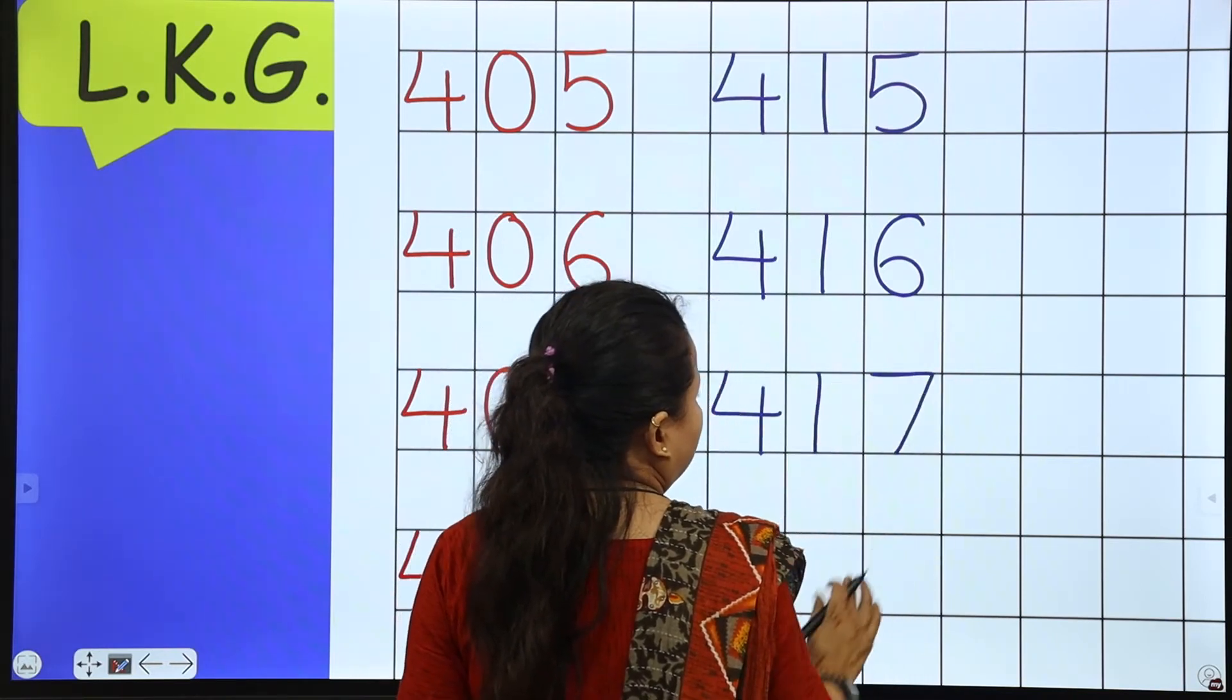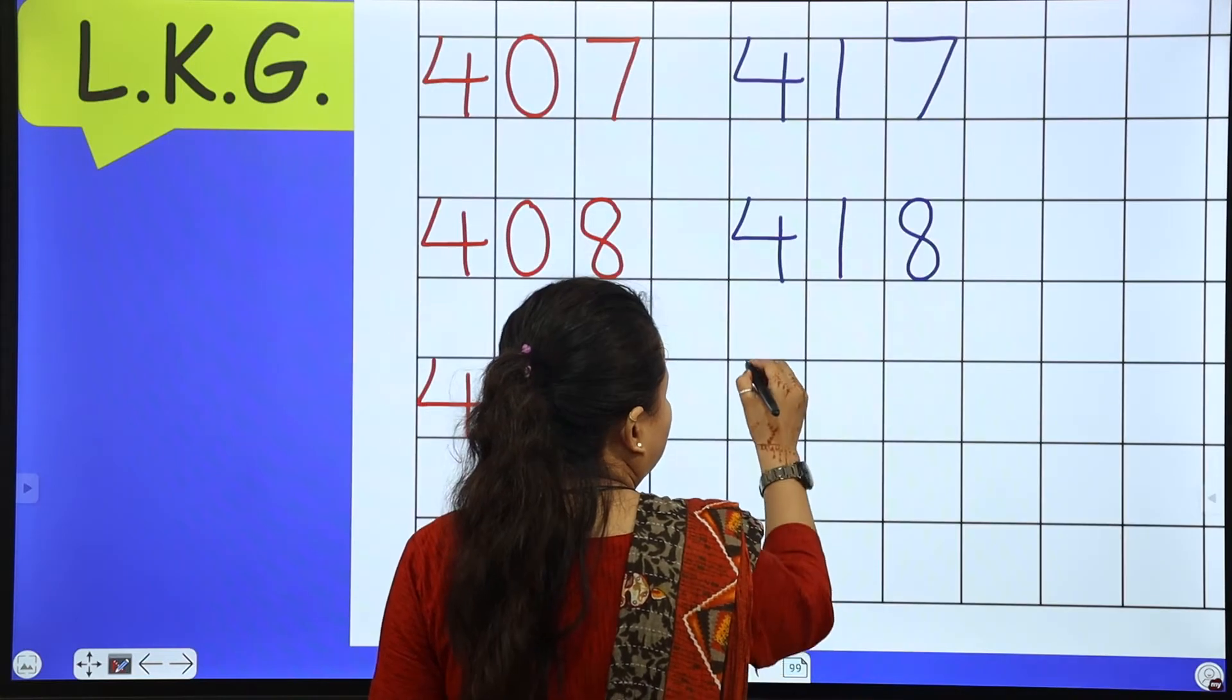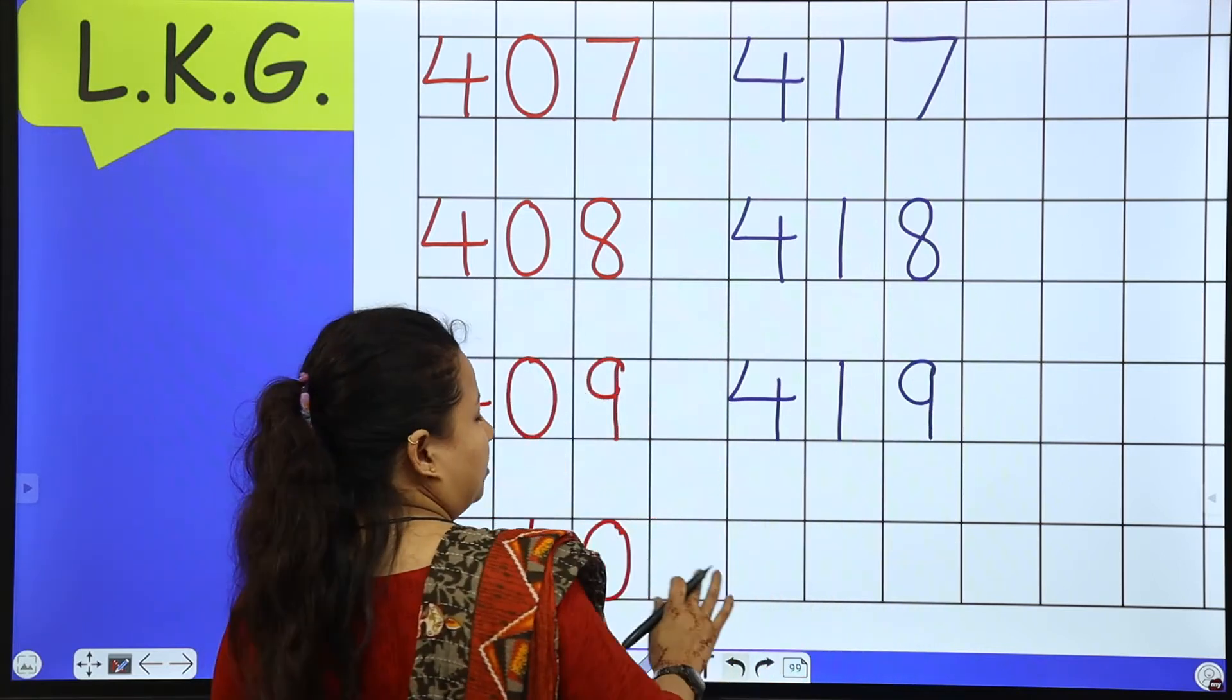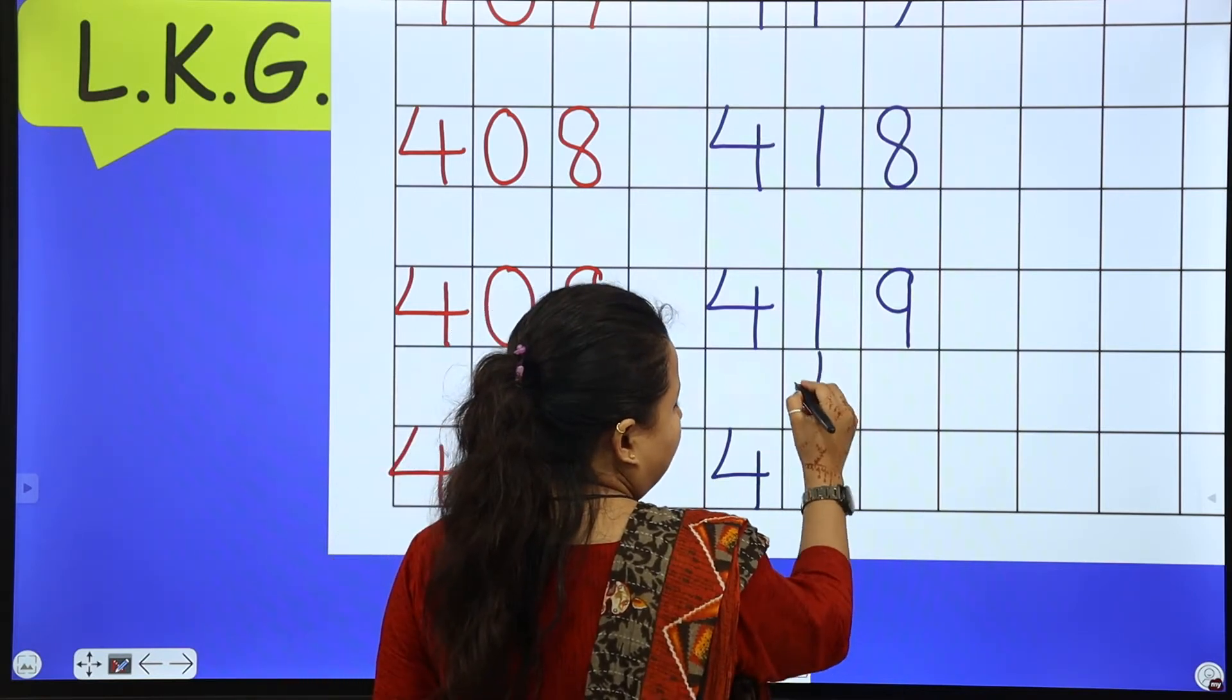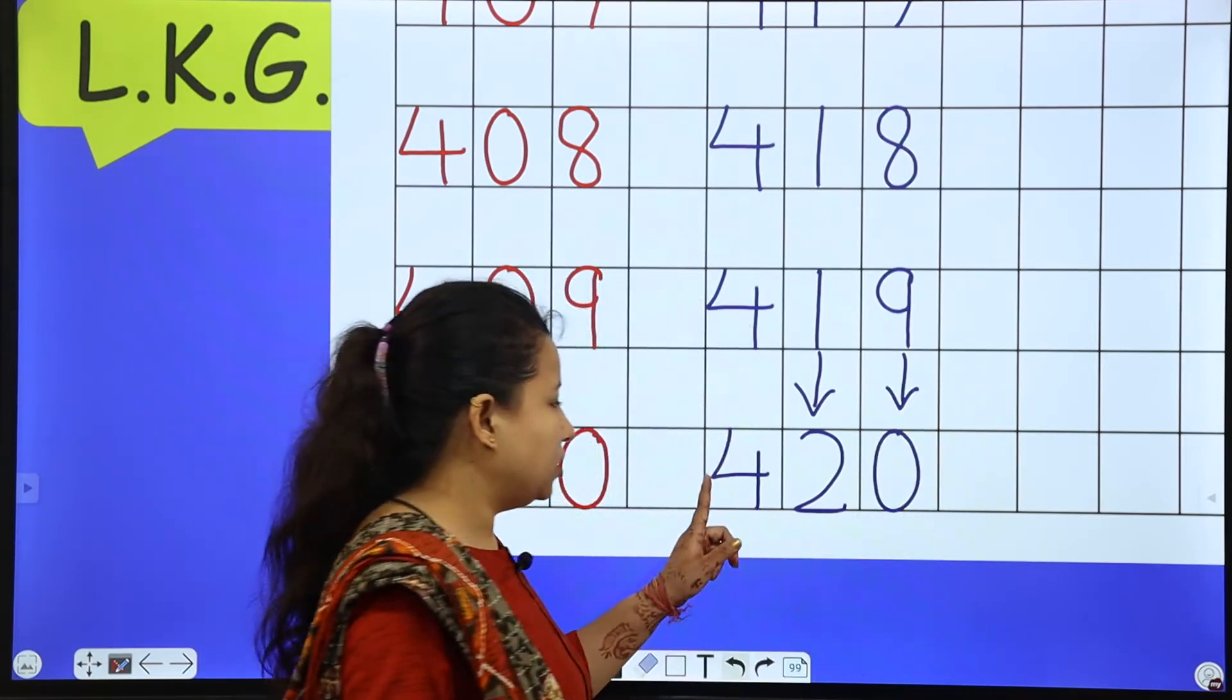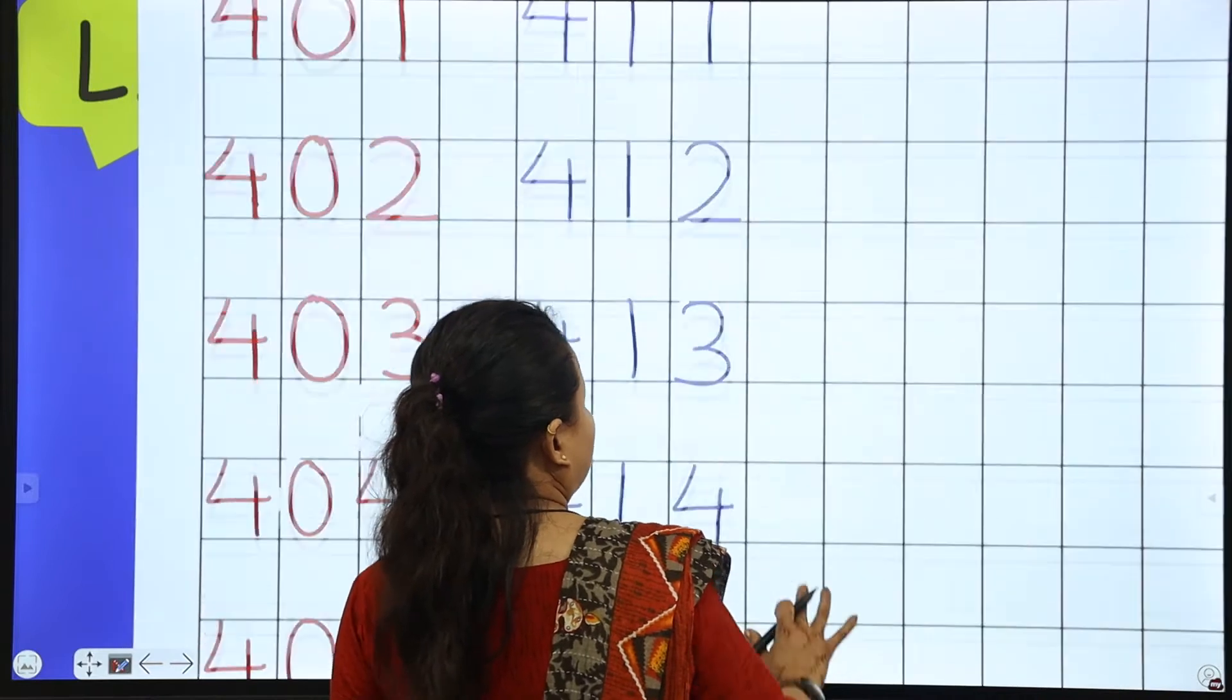417, 418, 419. Now next number is 400. Now 19. So after 1, 2. And after 9, 0.